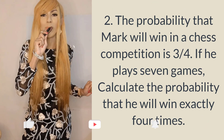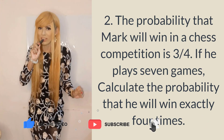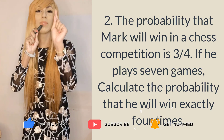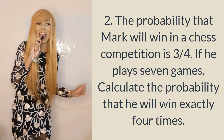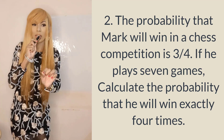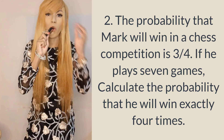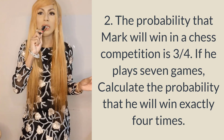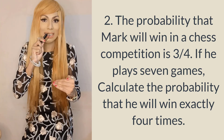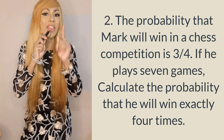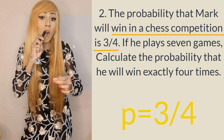Question number two. I'll be posting every Monday, Wednesday, and Friday, so do subscribe. The probability that Mark will win in a chess competition is 3 over 4. From here we already know P is 3/4, and Q is 1 minus 3/4 = 1/4. The event is about Mark winning, so the number of times Mark wins is our X.